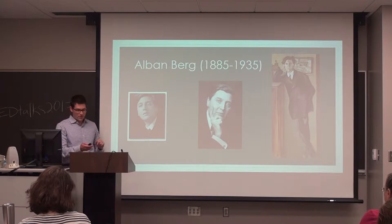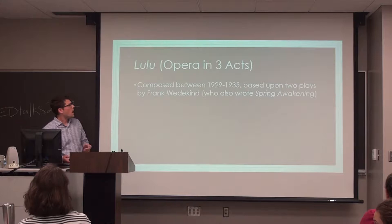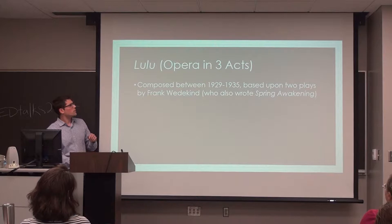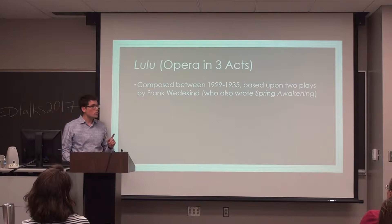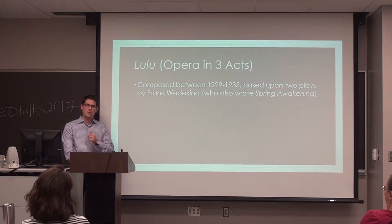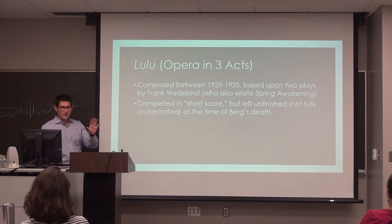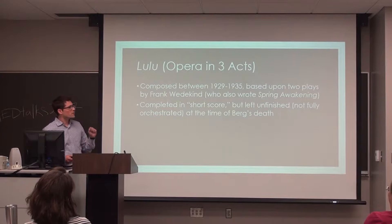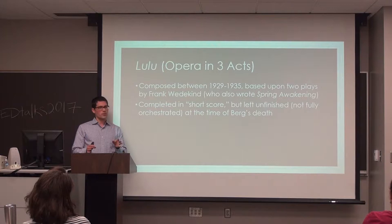The opera is in three acts, more or less. It's really one of his last works — he died in 1935 — and it was composed between 1929 and 1935. It was based upon two plays by Frank Wedekind, who serendipitously also wrote Spring Awakening, which our theater department is staging this weekend and last weekend. It was completed in short score, but it was actually left unfinished at the time of his death — he had written most of the notes, but hadn't really orchestrated it yet.